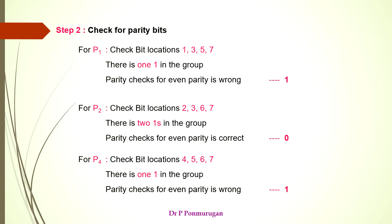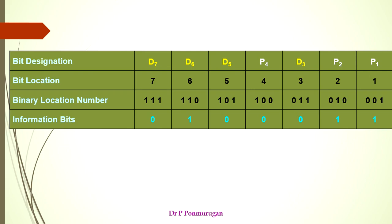So finally, for P1 it is wrong and we have placed a 1 as per the condition. For P2, it satisfies the even parity, so we have placed a 0. For P4, it does not satisfy the even parity condition, so we have placed a 1. This gives us the combination 1, 0, 1, which indicates the error location.